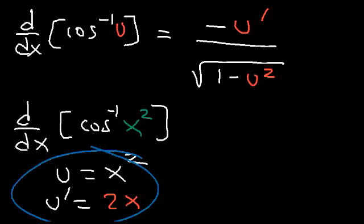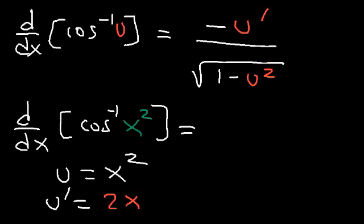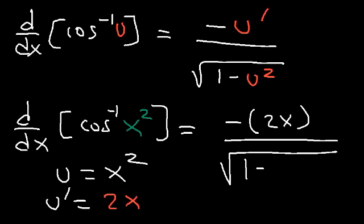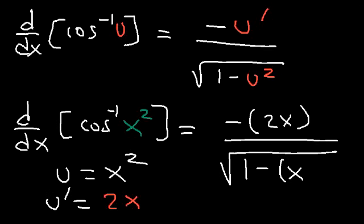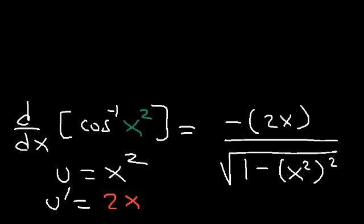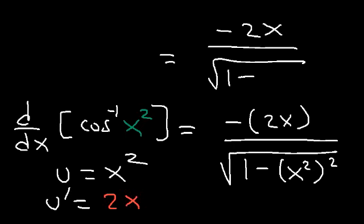Now we can plug this into the formula. The derivative of inverse cosine of x squared is going to be negative 2x divided by the square root of 1 minus x squared, squared. You can leave the answer like that, or rewrite it as negative 2x divided by the square root of 1 minus x to the fourth, since x squared squared equals x to the fourth.